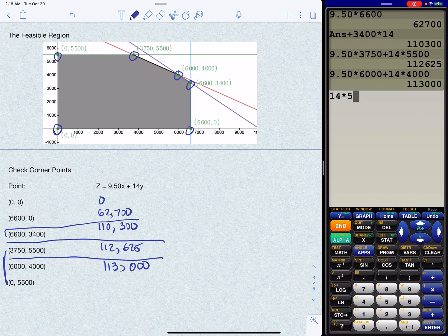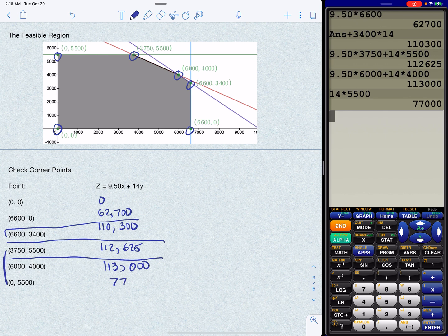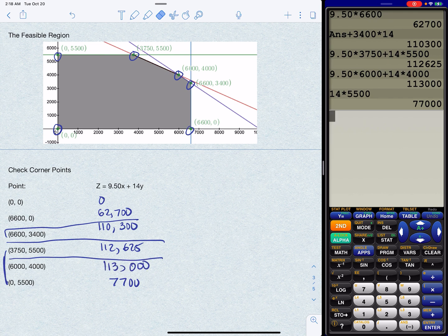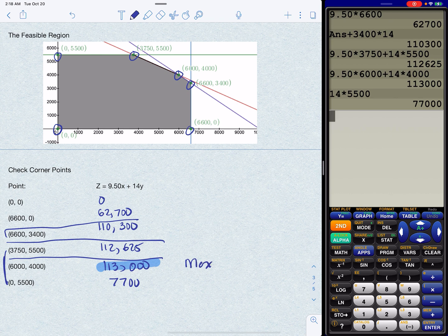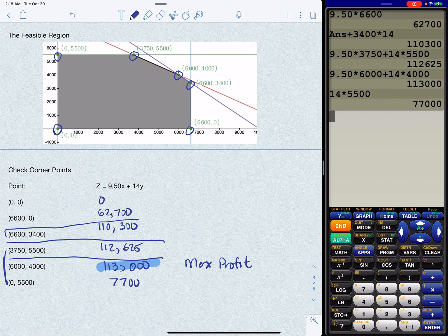But again, formality, we'll just do it. That's 14 times 5,500. So from all of this analysis, what we notice is right there, whoops, right there is your maximum profit. Right there, $113,000. And when does that happen? When we make 6,000 trucks and 4,000 fire engines. Thank you so much for watching.